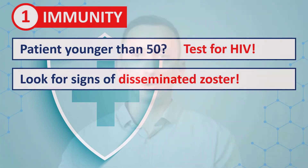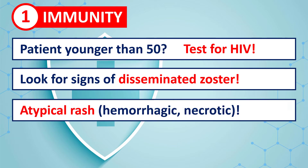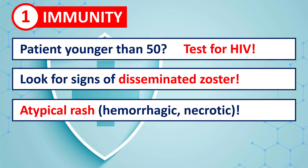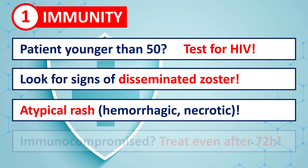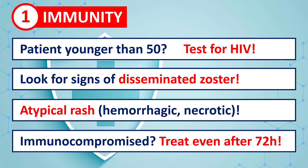In immunocompromised patients, the rash can look atypical — more severe than normal zoster, with hemorrhagic or necrotic areas. So be careful even if the rash doesn't appear very impressive in the beginning. And if they present after 4, 5, 6, or even 10 days of illness, you should still start antiviral treatment, because many immunocompromised individuals simply cannot control this infection.